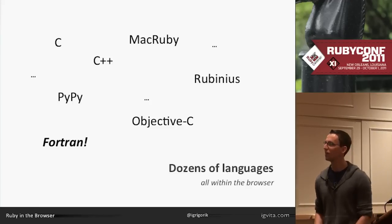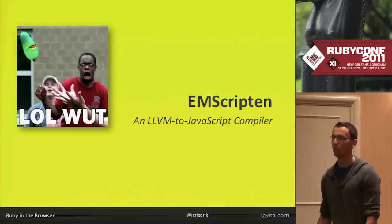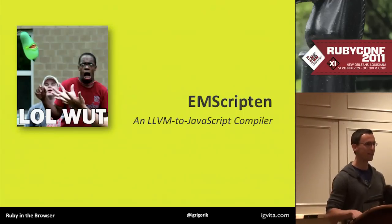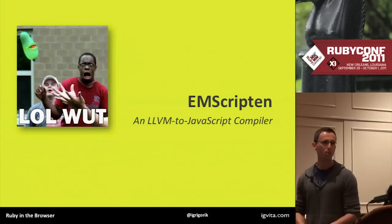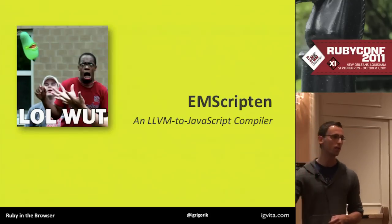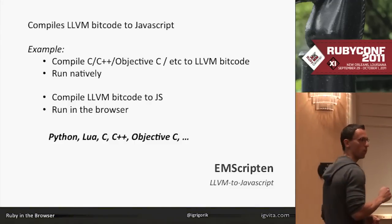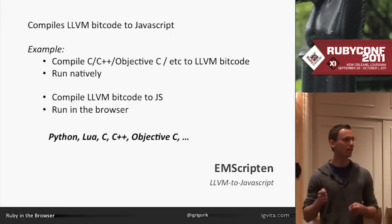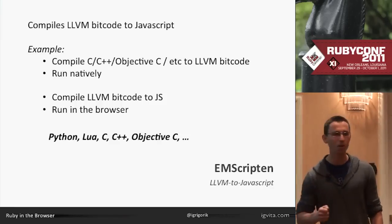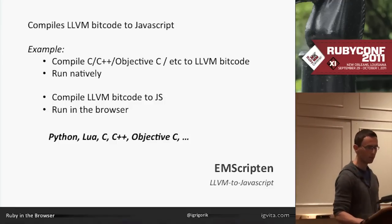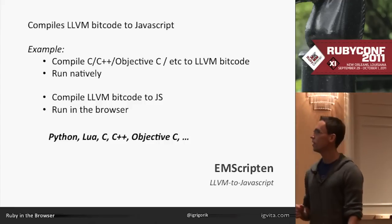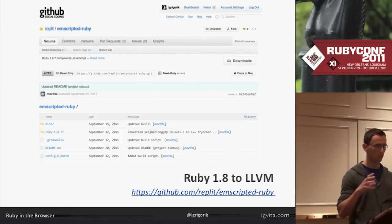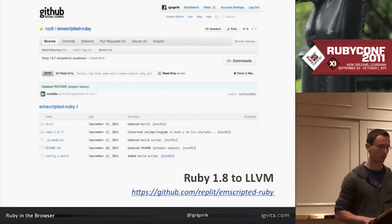That's when I discovered this project called Emscripten — I hope I'm pronouncing that correctly — which is an LLVM to JavaScript compiler, which is mind-blowing when you think about it. It takes the LLVM bitcode — you take your C, C++, whatever, compile it to bitcode — then you run that bitcode through Emscripten and it translates it to JavaScript. That means you can take that bitcode and run it natively on your machine, or run it in the browser. So we can run Python, Lua, C, whatever. And in fact there's even a Ruby project — Emscripted Ruby — it's basically Ruby 1.8.7 modified to compile against LLVM.